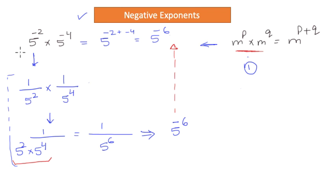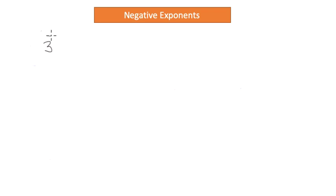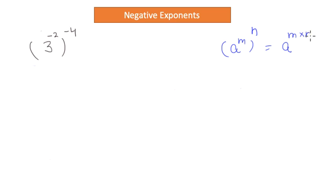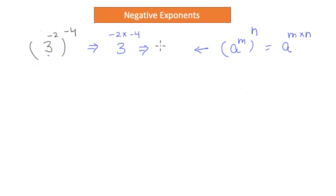Let's look at another example. There is a number 3 to the power negative 2 and it has a power of negative 4 applied to it. How do you solve this? This reminds me of the rule where a to the power m raised to a power n gives a to the power m times n — the powers get multiplied. So this simply becomes 3 to the power negative 2 times negative 4. Two negatives cancel each other and become positive, so it becomes 3 to the power 2 times 4, which is 3 to the power 8.